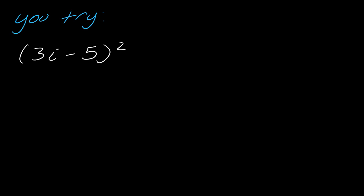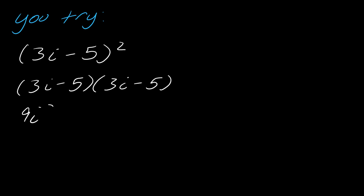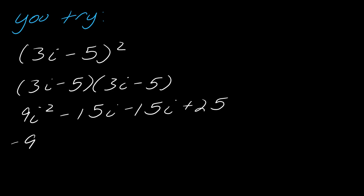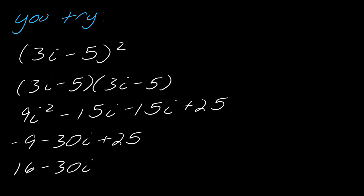Why don't you pause the video and try this one? Hit play when you're ready. I'm going to have 3i minus 5 times 3i minus 5. Working this out: 9i squared minus 15i minus 15i plus 25. This becomes negative 9 minus 30i plus 25, and ultimately this gives me 16 minus 30i. That's it for that one.